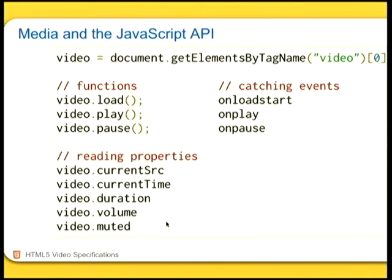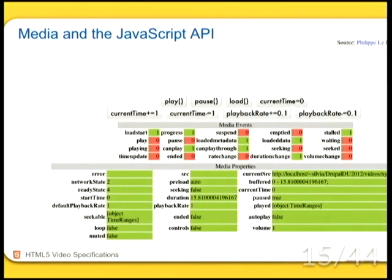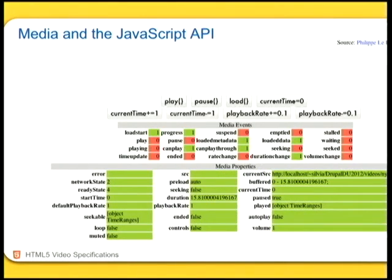All the properties are exposed in the interface. For example, currentSrc tells you which file the video is playing — so if you wanted to check whether you're using WebM or MPEG4, currentSrc will tell you. currentTime tells you the playback position. duration tells you how long it is. volume tells you how loud it is — volume is between zero and one, basically a percentage. And muted is a Boolean.